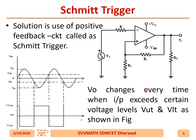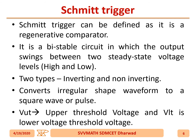V_out changes every time the input exceeds certain voltage levels called V_UT and V_LT. A Schmitt trigger can be defined as a regenerative comparator. It is a bi-stable circuit in which the output swings between two steady-state voltages — high and low.